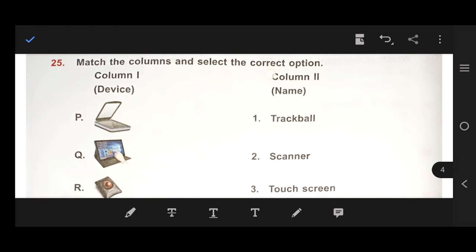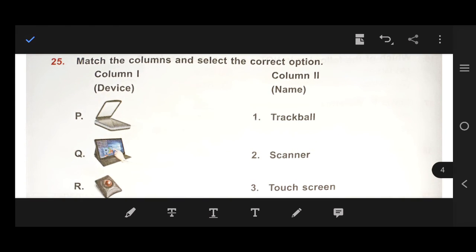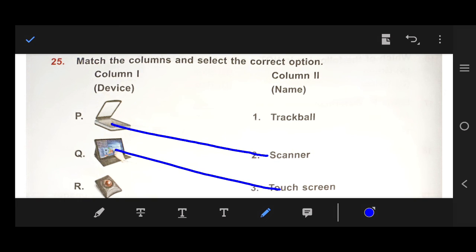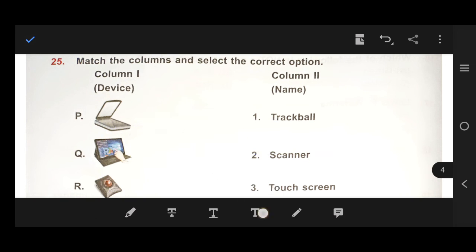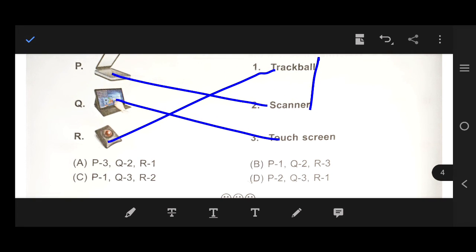Next, number 25, match the columns and select the correct option. Column 1, device name and column 2, name. At first, number P, it's a scanner. Number Q, it's a touch screen. And this is trackball. So, our answer is P2, Q3, R1. So, our right answer is D, P2, Q3, R1.